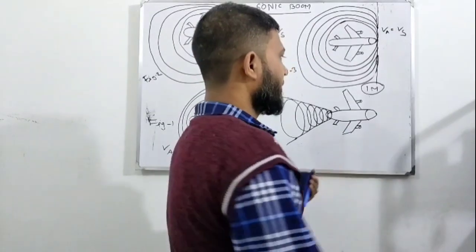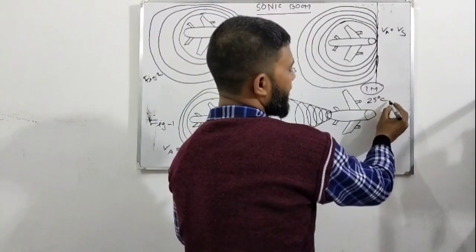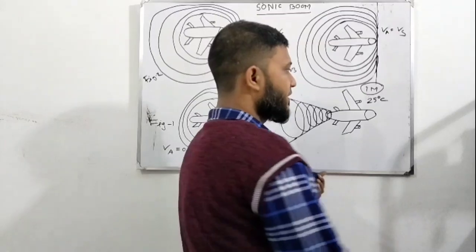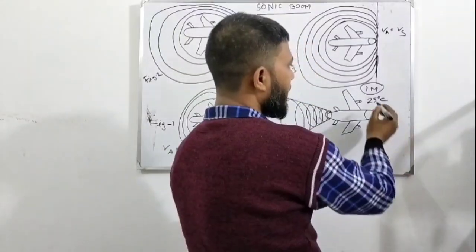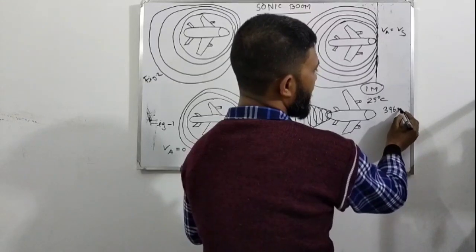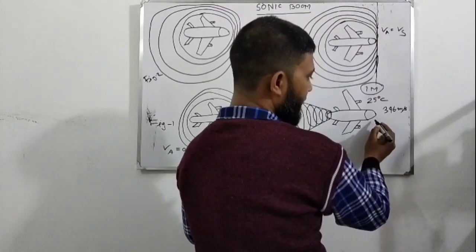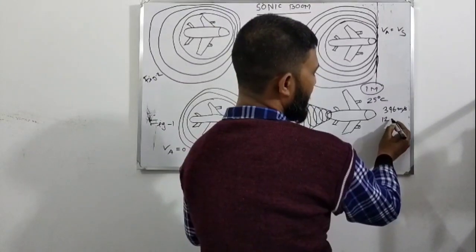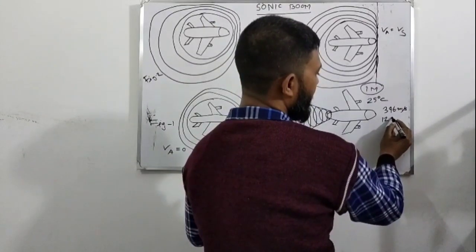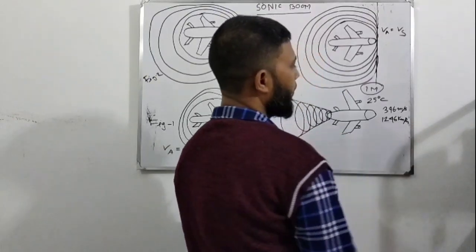At room temperature, that means, 25 degree Celsius temperature at sea level, sound speed is 346 meter per second. That means, 1246 kilometer per hour.